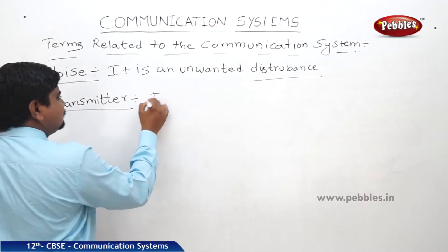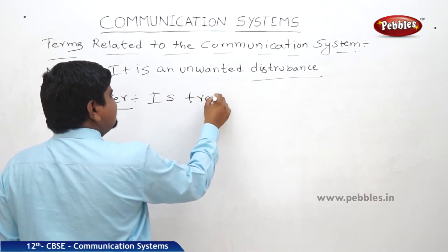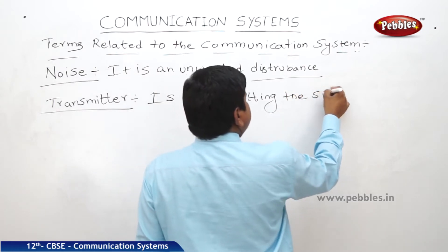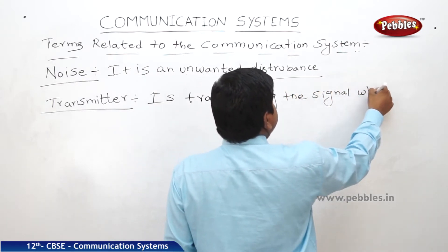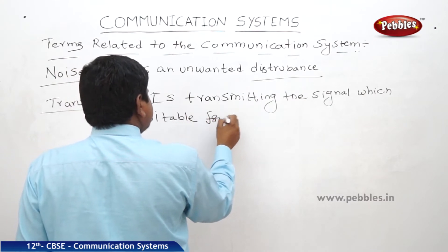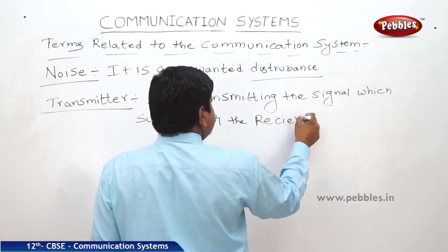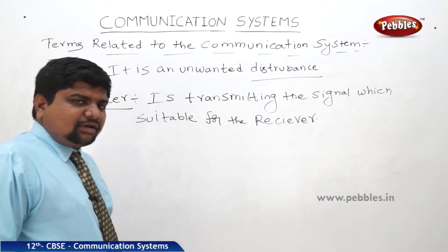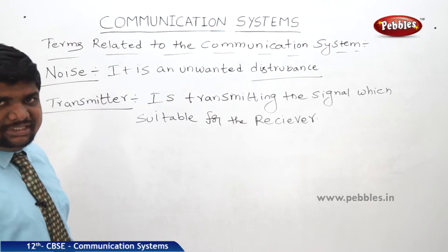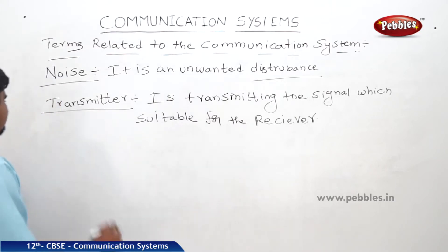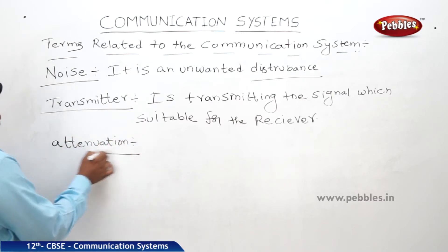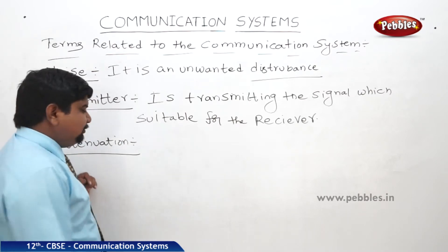So the transmitter is transmitting the signal which is suitable for the receiver. It should filter all the noises, and sometimes while you are filtering the noises there may be a loss of the signal. This loss of the signal is called attenuation. So what is the meaning of attenuation? Loss in the strength.